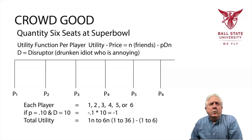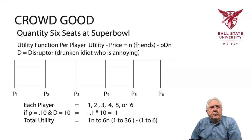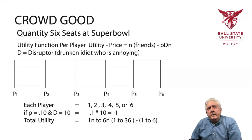Let's suppose that the probability of that happening is only 10%, and the disruption cost is 10. Then that would be minus 0.1 times 10, equal to minus 1. So the total utility would be 1N to 6N — somewhere between 1 and 36 — and the cost would be minus 1 to 6. Probably still worth going to the game, even if the guy is a jerk.